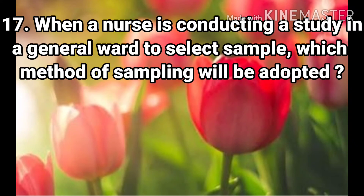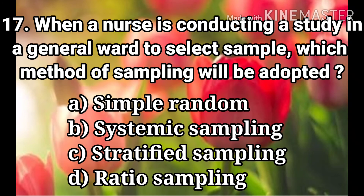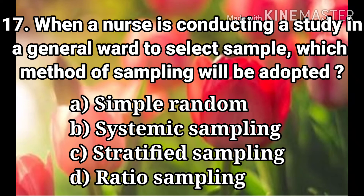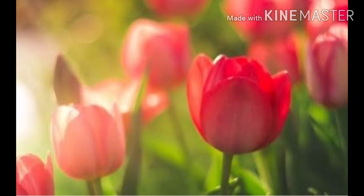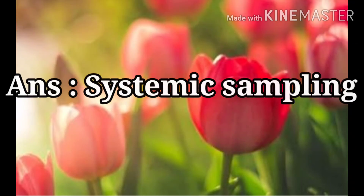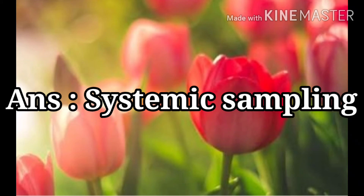Question 17: When a nurse is conducting a study in a general ward to select a sample, which method of sampling will be adopted? The options are Simple Random, Systemic Sampling, Stratified Sampling, and Ratio Sampling. The answer is Systemic Sampling.